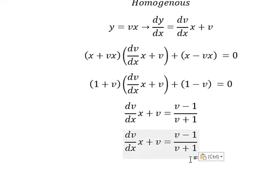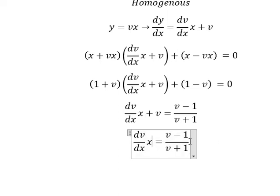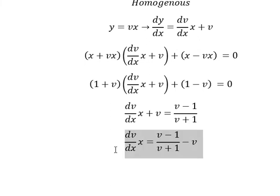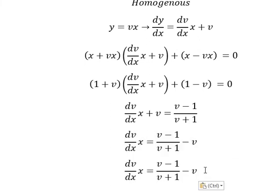Next I will put v on the right so we have negative v. We multiply by v plus one on numerator and denominator.